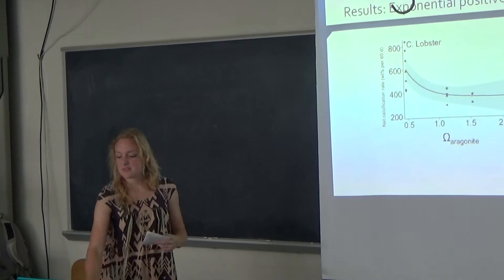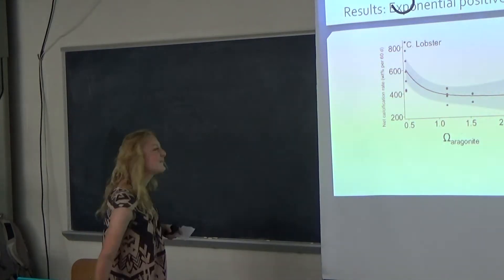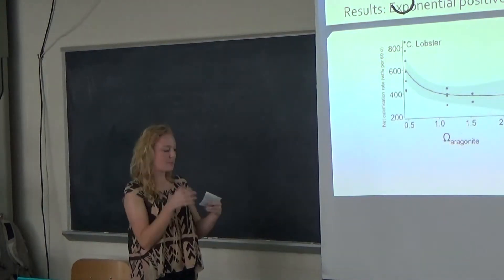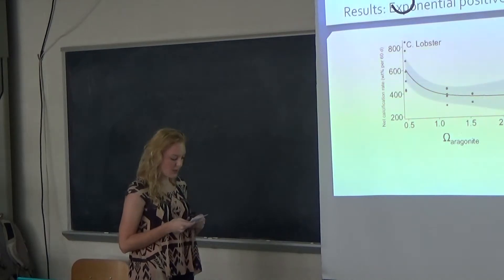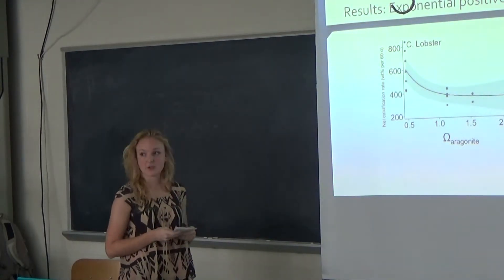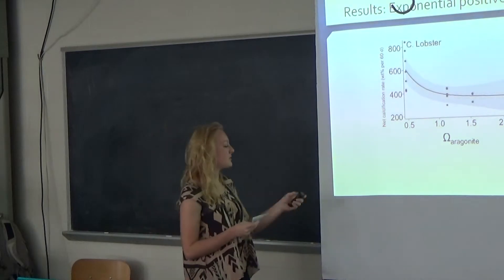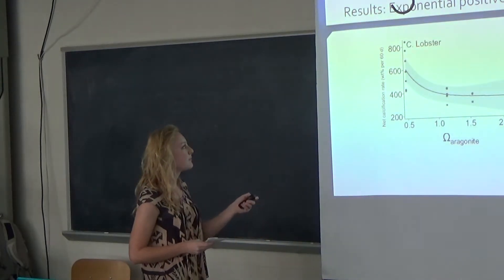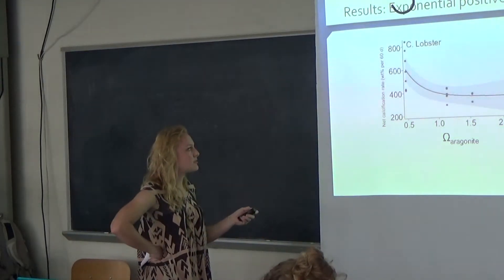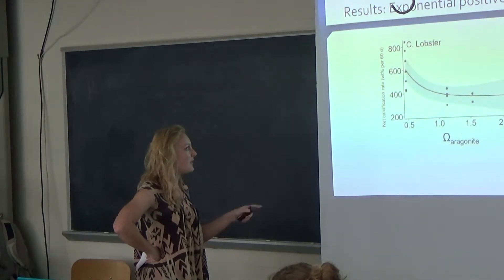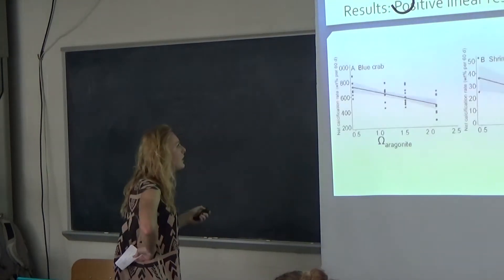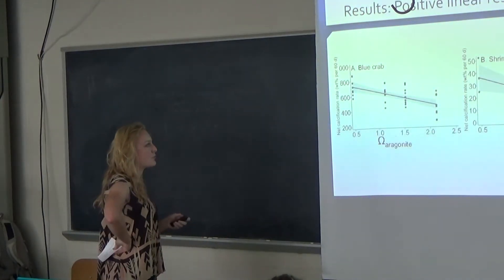For three of the specimens, we see that there's a high net calcification rate under high CO2 levels. As the pCO2 levels decrease, you see a decrease in the net calcification rate. You see this in the blue crab and the shrimp as well.